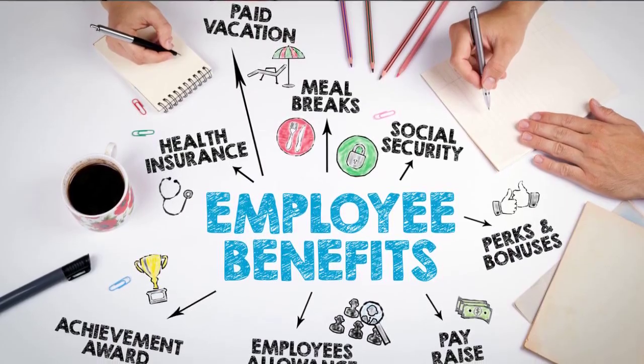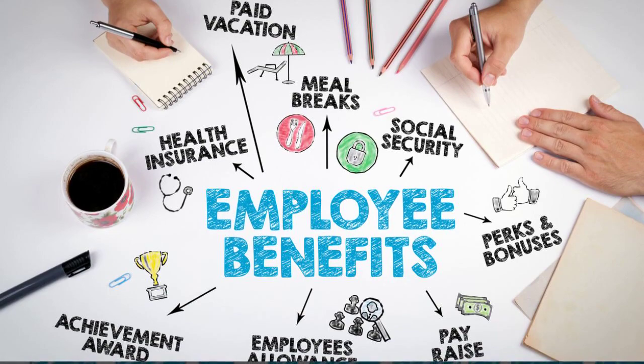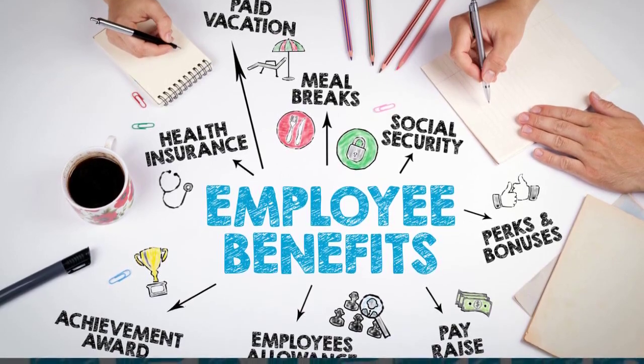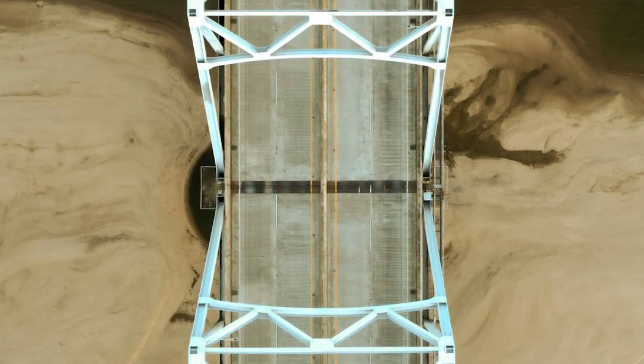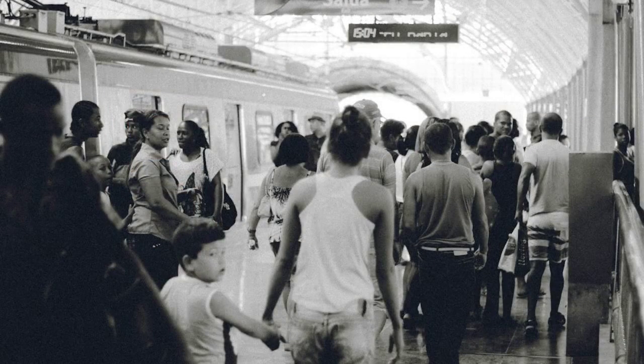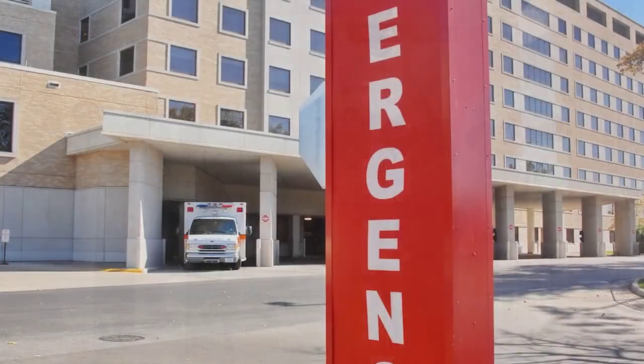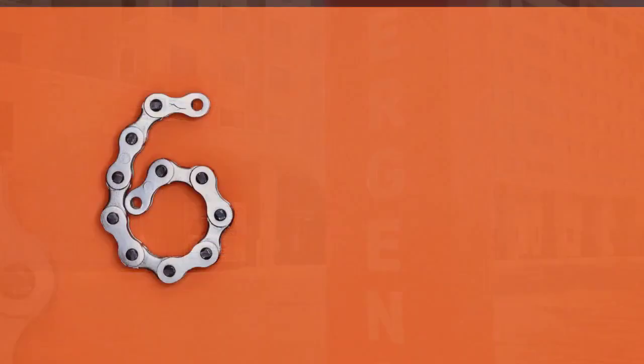Definition of MSB: Marginal Social Benefit, MSB, is the extra benefit society gains from each additional unit of public expenditure. Real-life Examples: Relate this to real-life scenarios. For instance, every additional dollar spent on education or health care contributes to the well-being of the community.